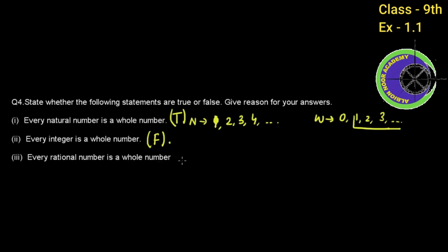Third part: Every rational number is a whole number. This is also FALSE. In rational numbers, you can have values like 1 by 2 or 2 by 3. When you solve 1 by 2, the answer is 0.5, which is not a whole number. Whole numbers are always countable integers, so this statement is false.